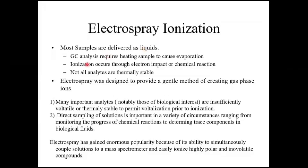In some cases, like in gas chromatography, when the eluent from the gas chromatographic column is passed on to mass spectrometry, the analyte is already in gaseous form. Gas chromatography requires heating of the sample to cause evaporation, and ionization occurs through electron impact or chemical ionization of the evaporated sample.